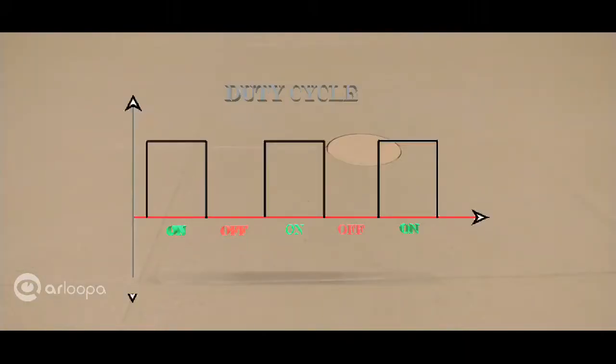Duty cycle or power cycle is a fraction of one period for which a signal or system is active. Duty cycle is represented in percentage or ratio.